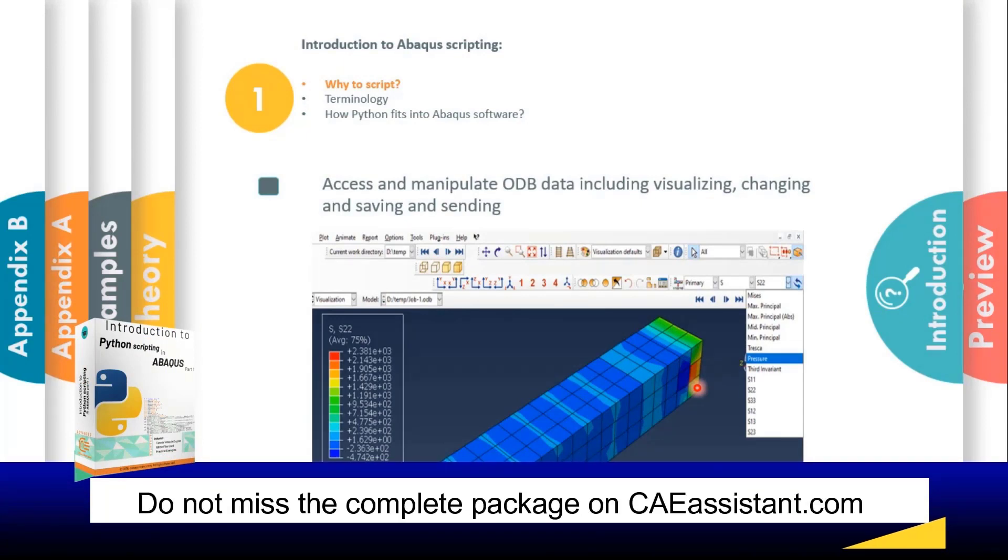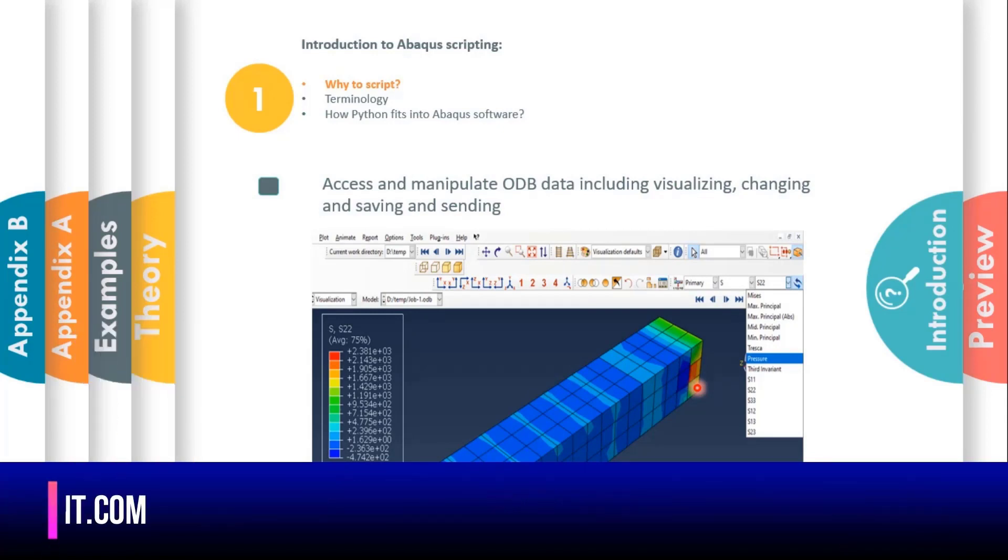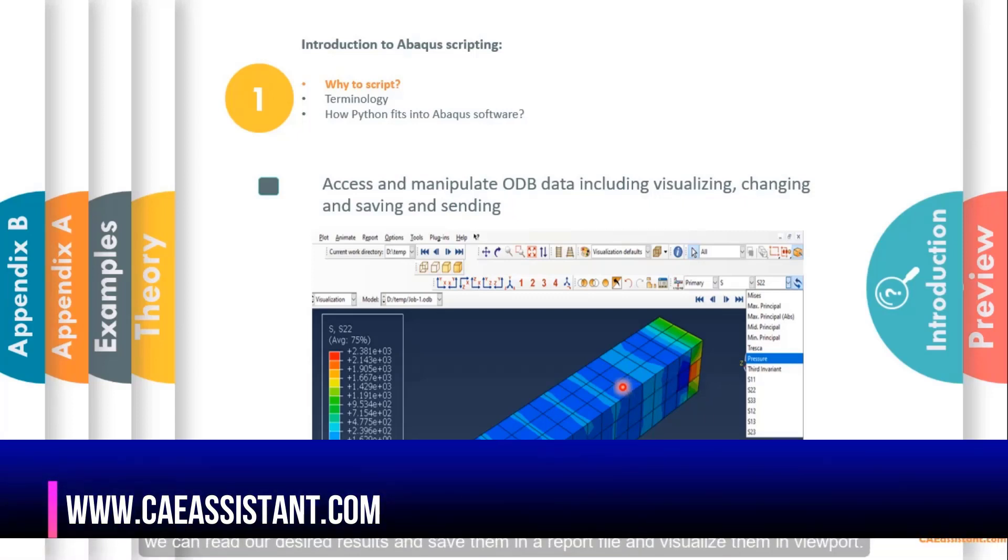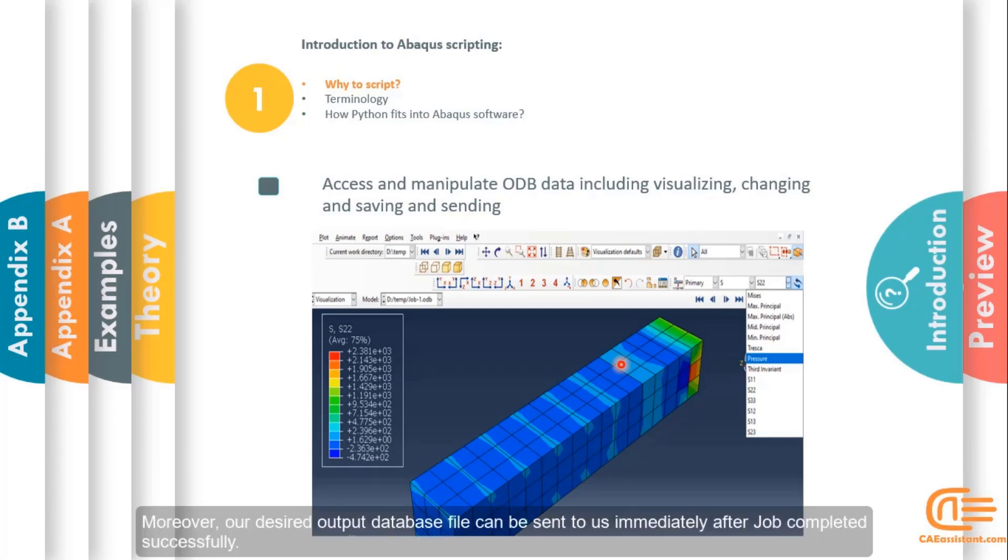The last reason that we need to script is to read from and write to an output database file. That is why we can read our desired results and save them in a report file and also visualize them in viewport. Moreover, our desired output database file can be sent to us immediately after the job completes successfully.